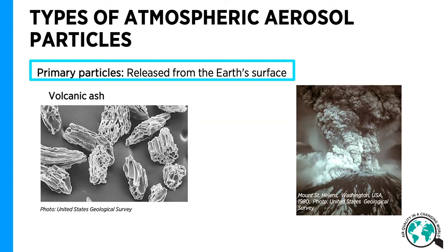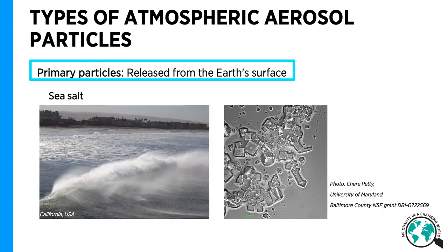Volcanic ash is primary particles of natural origin. On the left-hand side of the slide, you can see a microscope picture of volcanic ash, which is also coarse-sized. Sea salt originates from the surface of the sea, for example, via sea spray. A sea with a high salt content naturally releases more sea salt particles than a sea with a low salt content. Sea salt is cubic and coarse-sized.